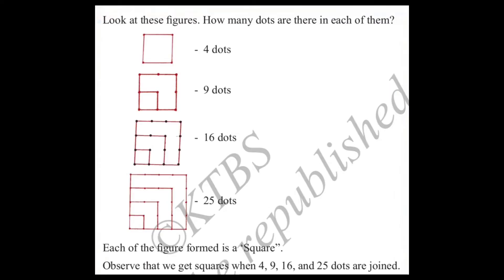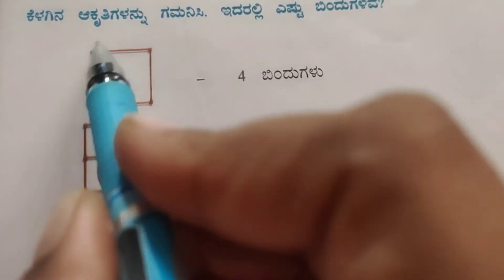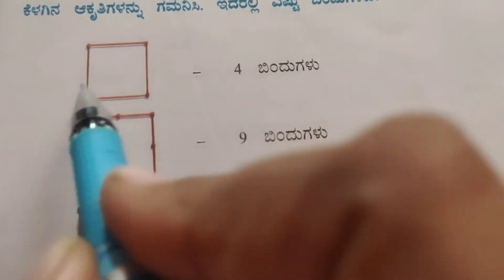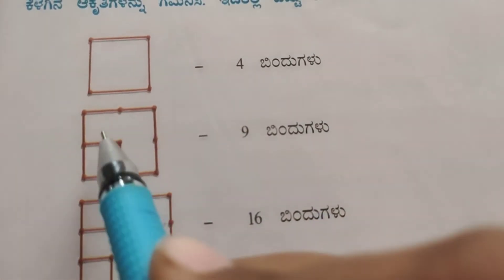Look at these figures — how many dots are there in each of them? Counting the first figure: 1, 2, 3, 4 — four dots.